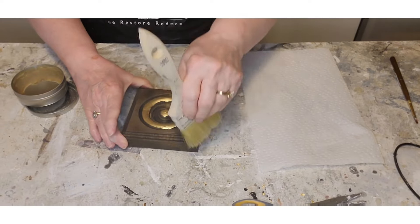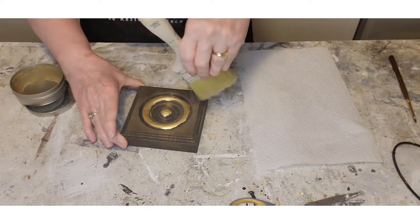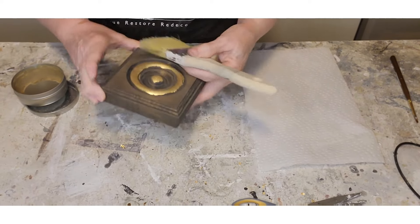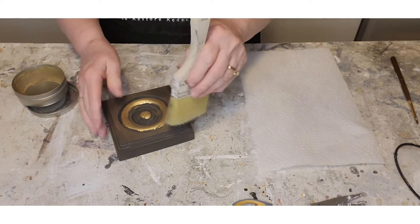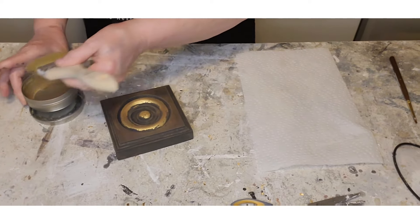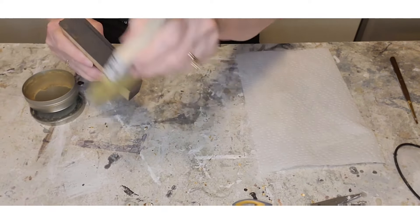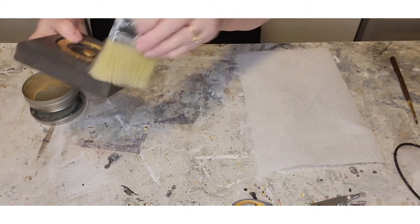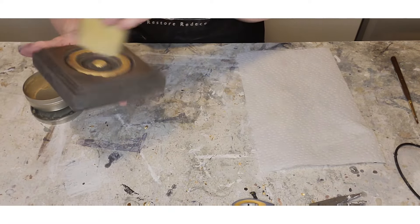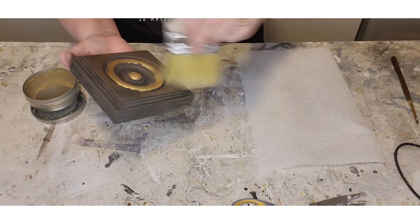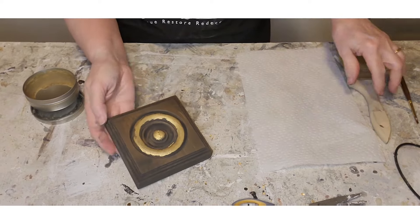If you put the dark wax on, it will dull down that gold leaf also. You just want to lightly, lightly, lightly do that.